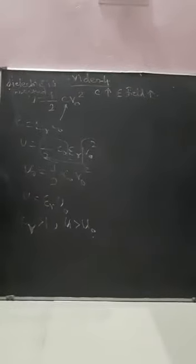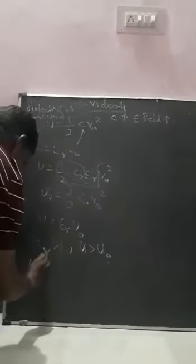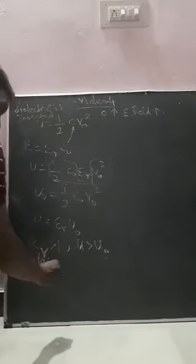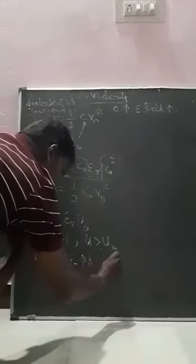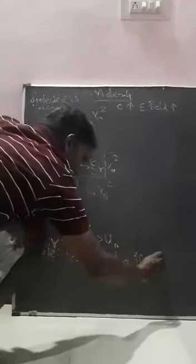Note that the potential difference V₀ across the capacitor is constant. The electric field between the plates also remains constant. Two things to note: the potential difference V₀ between the capacitor plates remains constant, and when V₀ is constant, the electric field between the plates also remains constant.